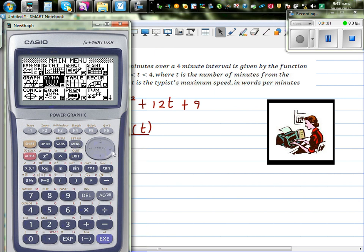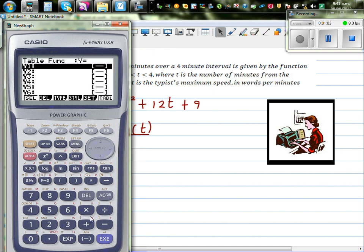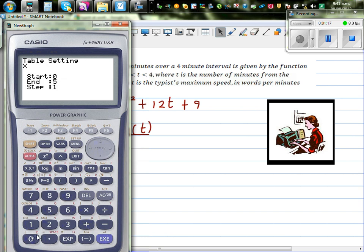Let's say 0, 1, 2, 3, 4. Let us use a calculator to find these values. Go to table and type in the equation -6x² + 12x + 90, just to have a sense of what's happening. I'll go from 0 to 4, step of 1.